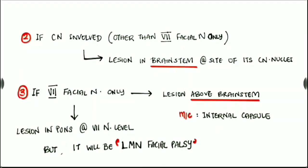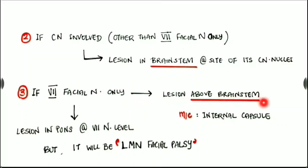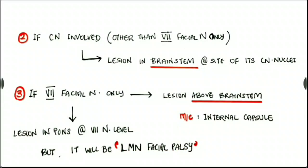The second possibility in cranial nerve examination is if any cranial nerve other than the facial nerve is involved. The possibility then is a lesion in the brainstem at the site of that cranial nerve's nuclei. The third possibility is simply facial nerve involvement only, with two sub-possibilities: most commonly the lesion is above the brainstem, most commonly at the internal capsule. The second possibility is a lesion in the pons at the facial nuclei level, but it will be an LMN facial palsy.